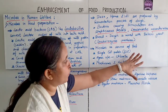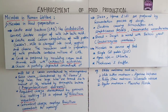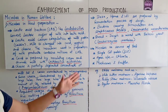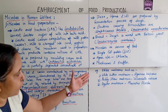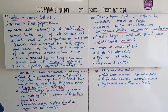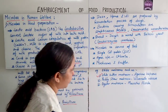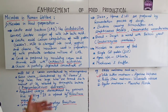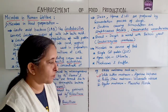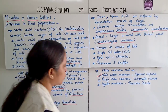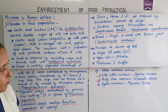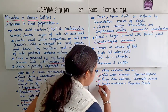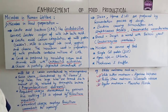Microbes as a source of food include single cell protein (SCP), algae species such as Chlorella, mushrooms, and truffles. Examples of edible mushrooms are: white button mushroom — Agaricus bisporus; paddy straw mushroom — Volvariella volvacea; and oyster mushroom — Pleurotus florida.